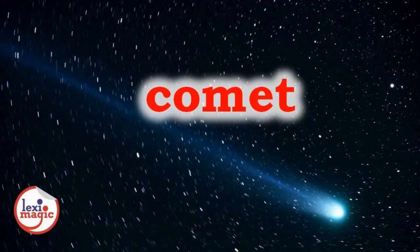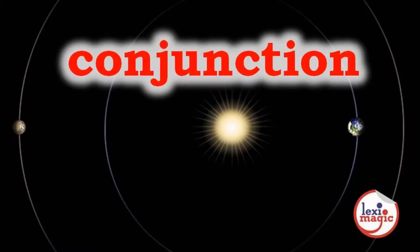Comet is a small icy object that orbits the sun and has a long tail of gas and dust. Conjunction happens when two planets or celestial objects appear to be in the same position in the sky.